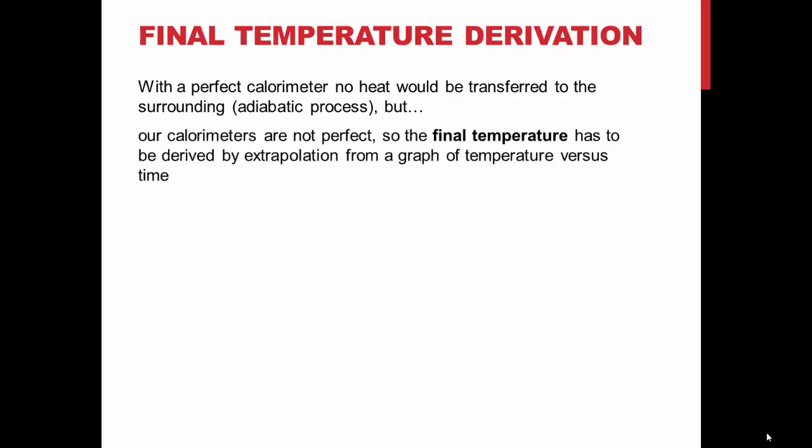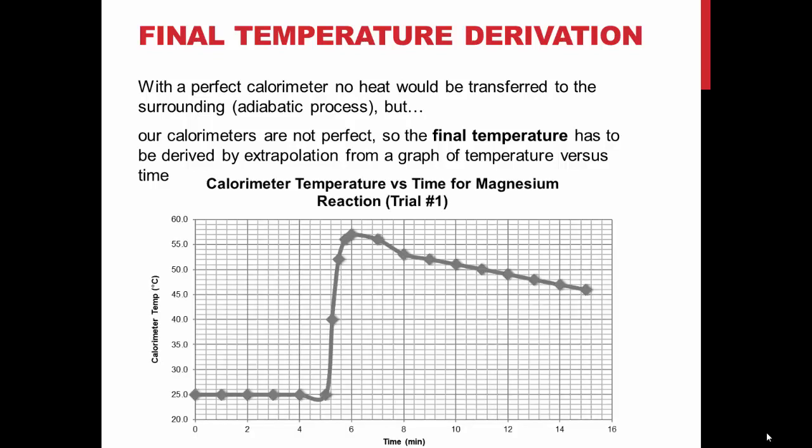The calorimeters used in this experiment will lose a certain amount of heat to their surroundings, so the temperature after the addition of magnesium has to be found by extrapolating the graph of temperature versus time. This is done as shown by drawing a straight line from the way the temperature decreases to a vertical line made at the five-minute mark.